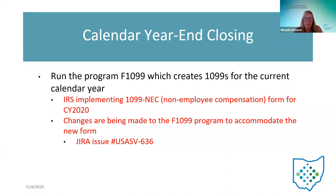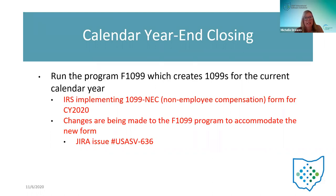The next steps are other things that need to be done at calendar year-end time. Running the F 1099 program needs to be done to create the 1099s for the current calendar year. The IRS is implementing the 1099 NEC. I wish I could show it to you today and run the F 1099 program and show you the changes, but they're in the process of making those changes to the classic F 1099 program. USAS V636 is the JIRA issue they're going to be working on to make those changes, and the F 1099 program will have both the 1099 NEC and 1099 miscellaneous forms.